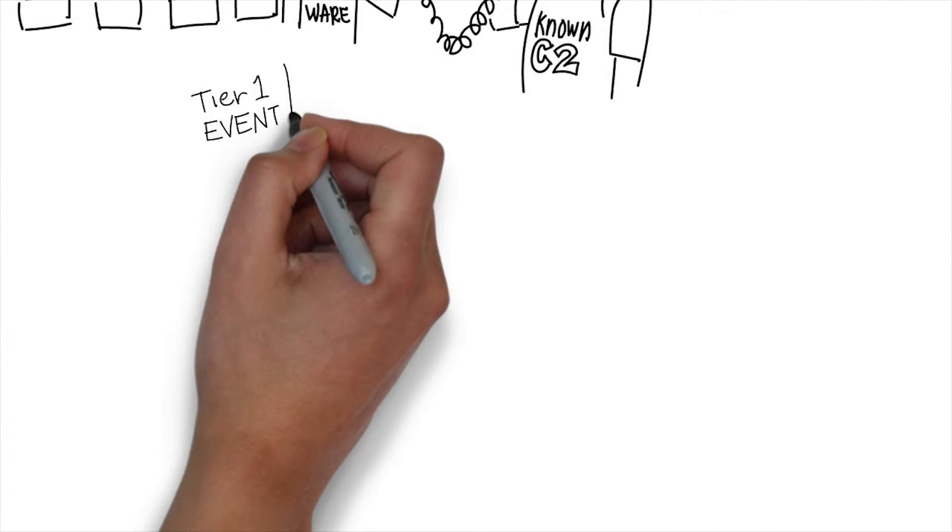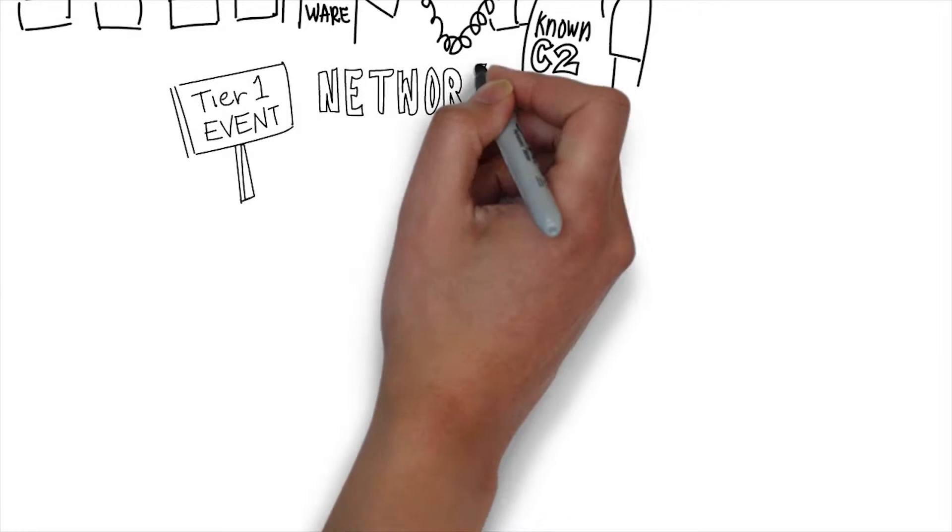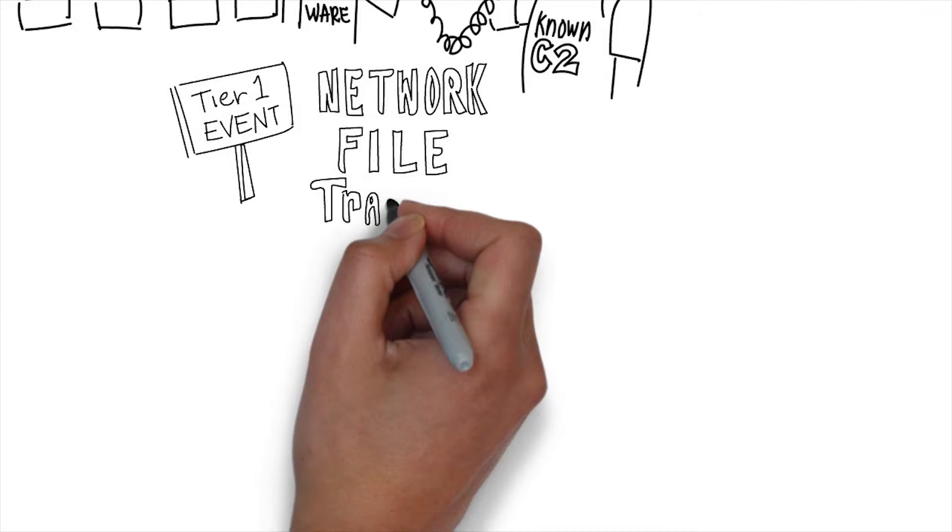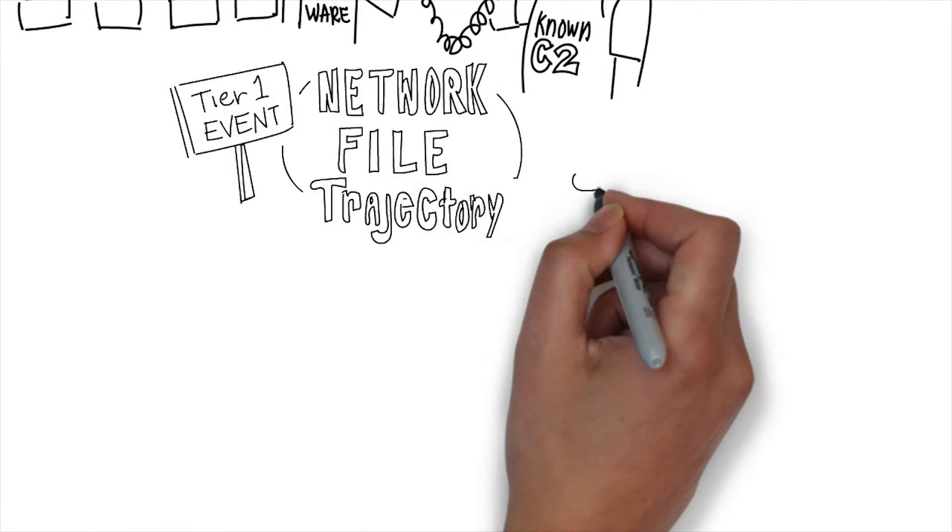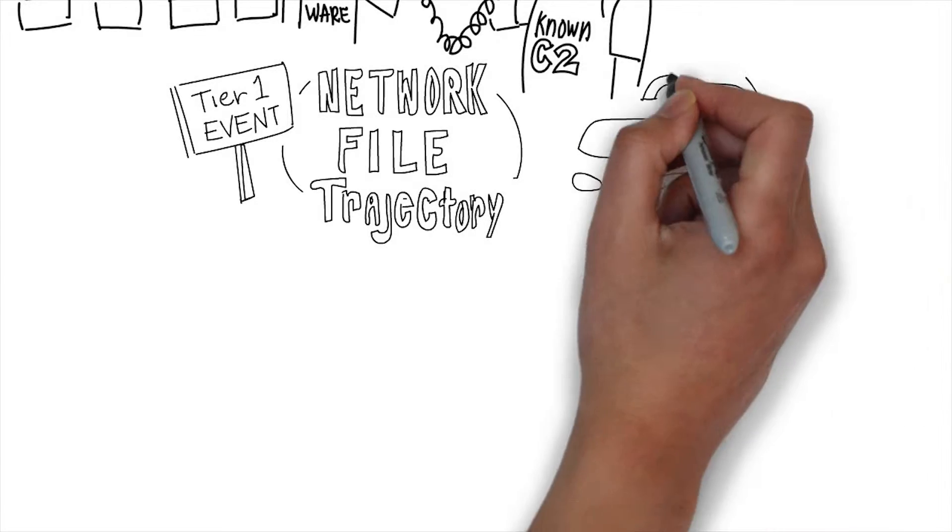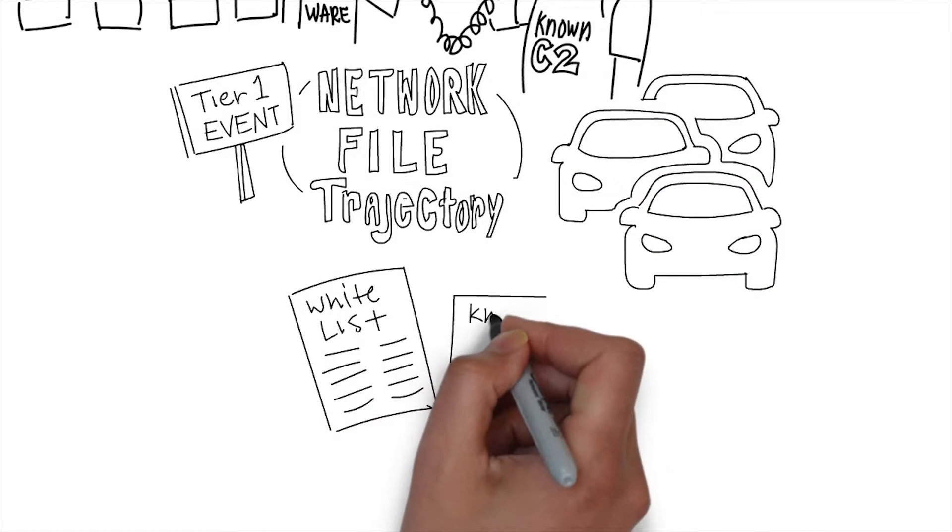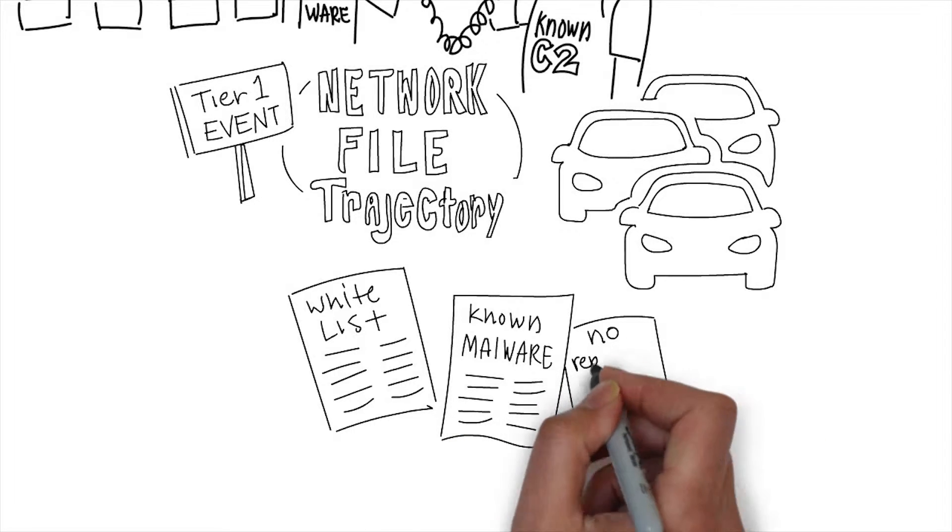Network file trajectory, we've touched briefly upon it before. That's simply monitoring all the traffic coming across your network, identifying those files and their disposition. Are they known good files on a whitelist like the National Resource Reference Library? Are they known bad malware? Do they match a malware signature? More importantly, do they have no reputation - no one's ever seen this before?